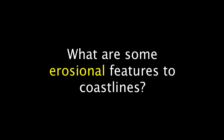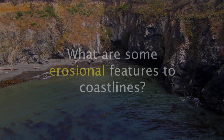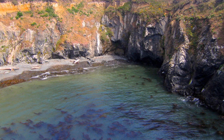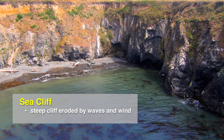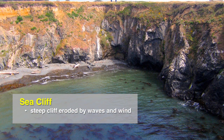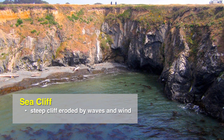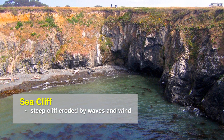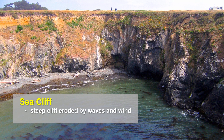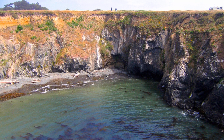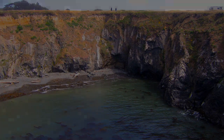Some of the more prominent features that we see in an erosional coast include sea cliffs. Essentially, it's a steep cliff that's been eroded by waves and wind, with big chunks of rock that calve off and break off into the surf, leaving behind a steep wall.